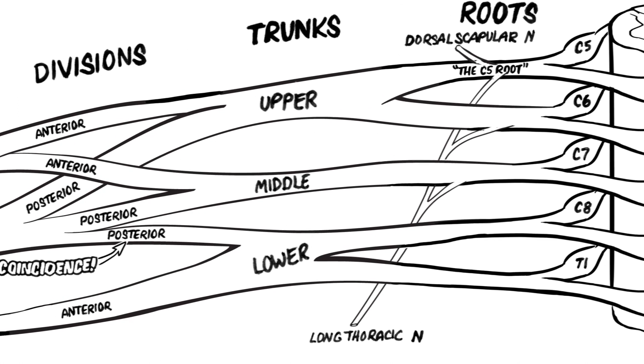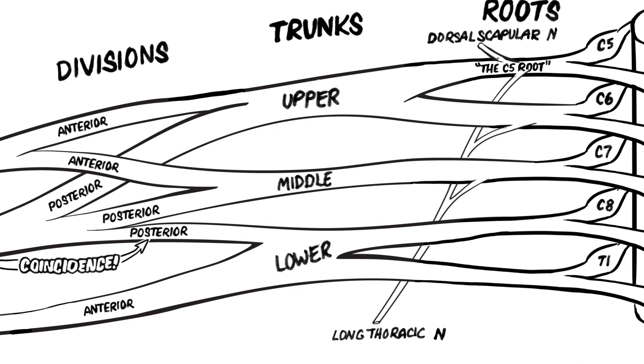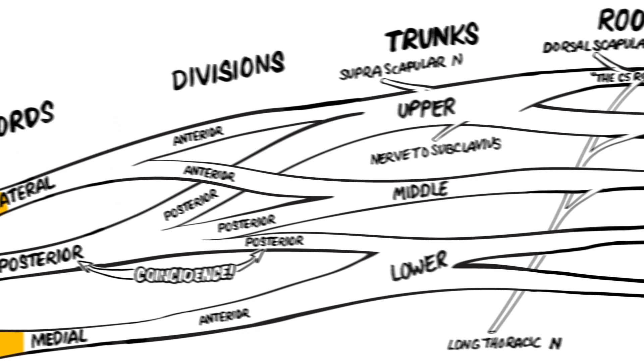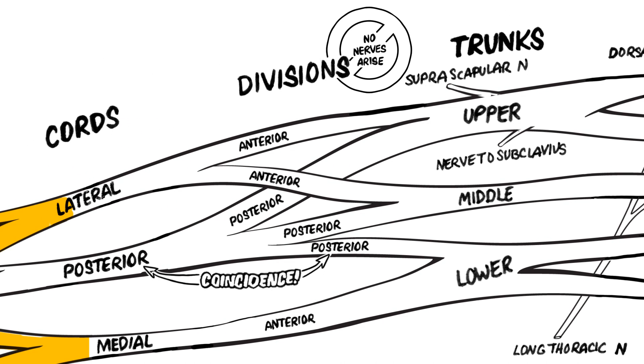Two nerves also arise from the trunks. Both the suprascapular nerve and the nerve to subclavius are branches from the upper trunk. Remember the divisions do not give rise to any nerves.